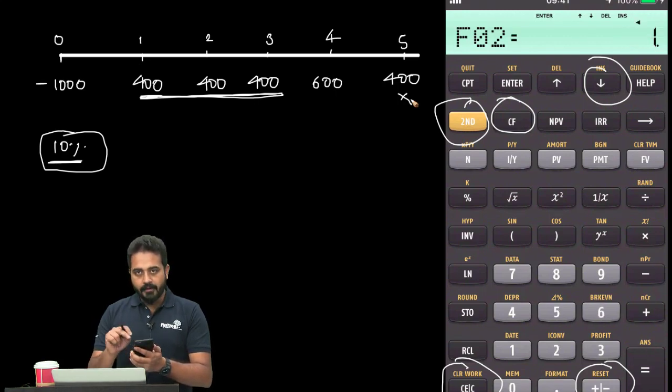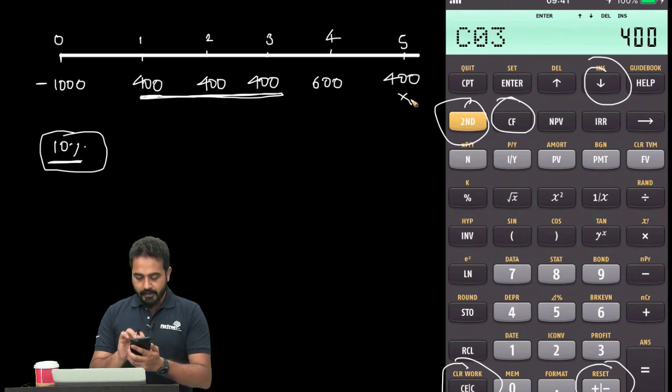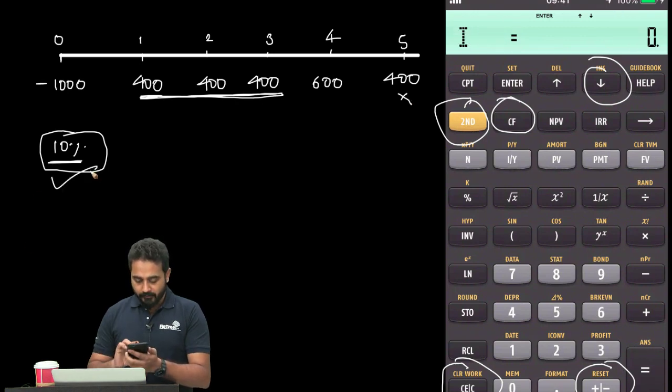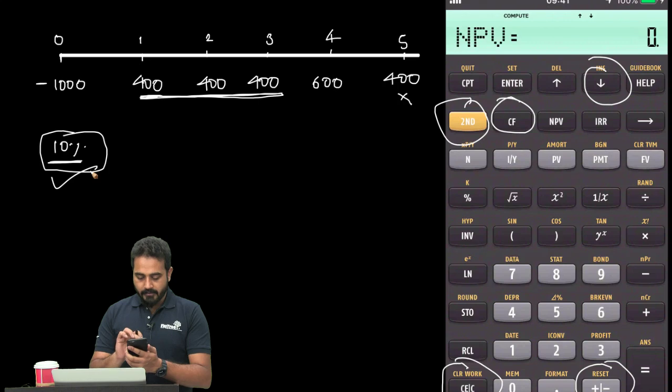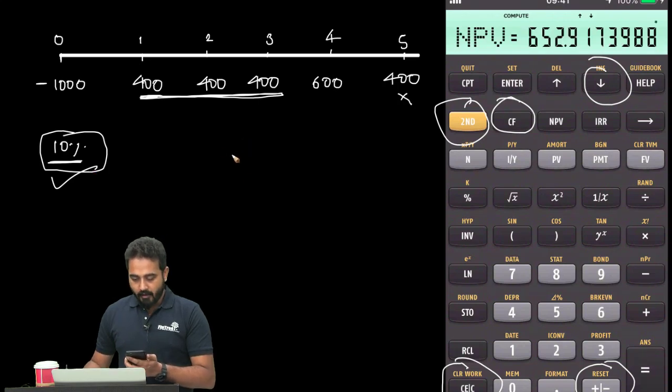Now for CF3, that's $400. I'll press the NPV button. The calculator is asking for the discount rate, so that's 10%. Press the down arrow, press Compute, and we have the answer as $652.91.